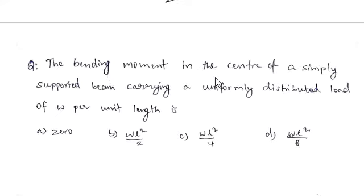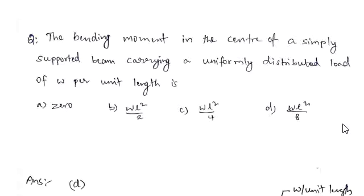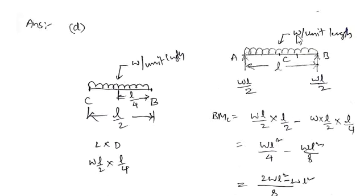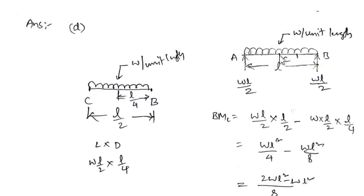Next question: the bending moment at the center of a simply supported beam carrying a uniformly distributed load of w per unit length is: option A 0, option B wL²/2, option C wL²/4, option D wL²/8. For total UDL of w per unit length and beam length L, the support reactions are wL/2 each.